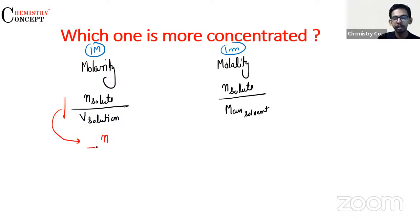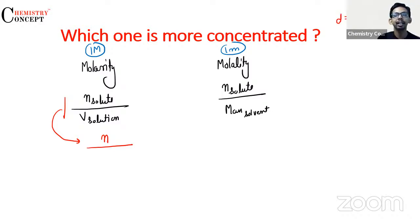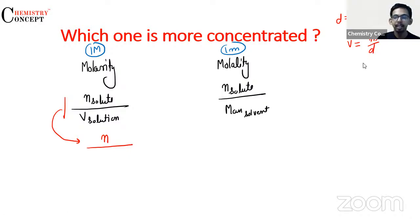It is number of moles of solute divided by density. Density ka formula: density is mass upon volume. Hence, volume is mass upon density. Aur agar main mass ki term mein likhna chahoon toh density — inhi sab ka use karne ki koshish karte hain.